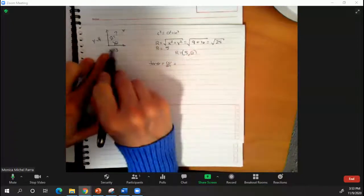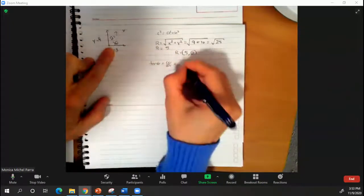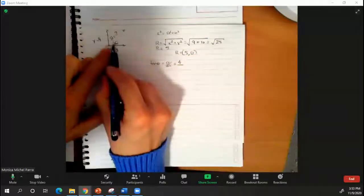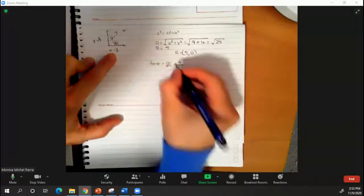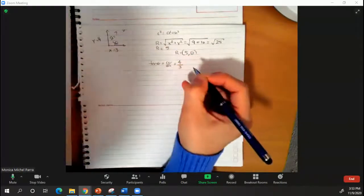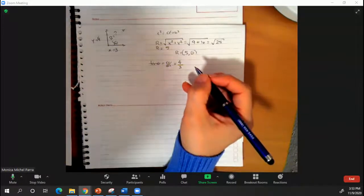So I'm going to have that the opposite for this angle is going to be 4 and the adjacent side for this angle is actually going to be 3. So I shall have the number 4 over 3.